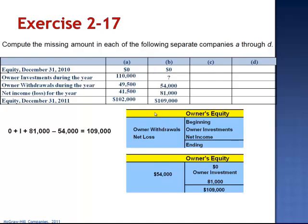Our formula becomes 0 plus I plus $81,000 minus $54,000 equals $109,000. I plus $27,000 equals $109,000. When we subtract $27,000 from both sides, we see that I, the investment, is $82,000.